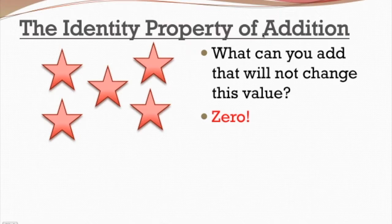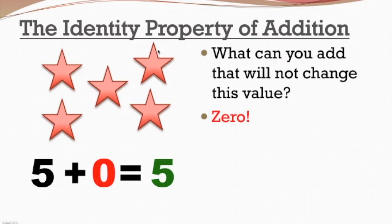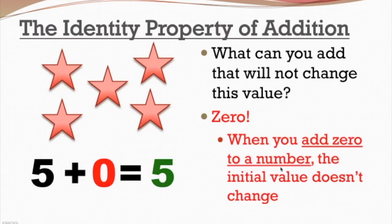Well, that's pretty simple — I can just add zero. And that's what the identity property of addition says. So if I have five stars and I add zero stars, then I end up with the five stars I started off with. Basically, think about the identity as what you're starting with — what we have in the beginning. We had five stars and we want that number to stay the same. What could we add so it doesn't change? It's just zero. That's what the property says: when you add zero to any number, the initial value doesn't change.